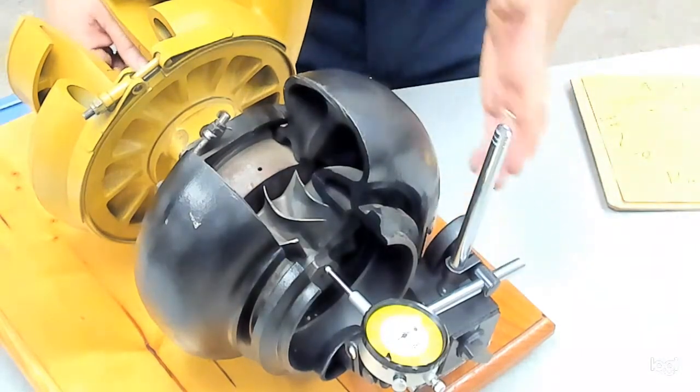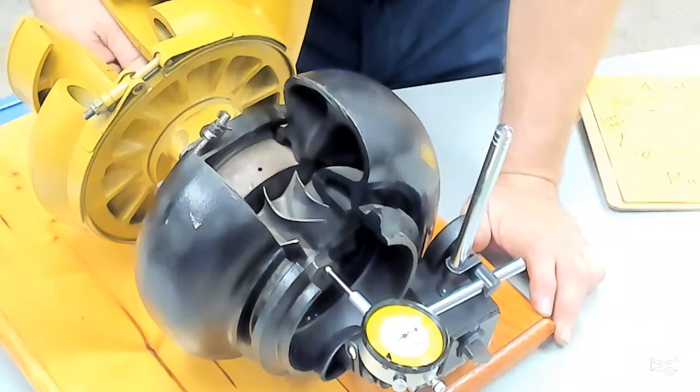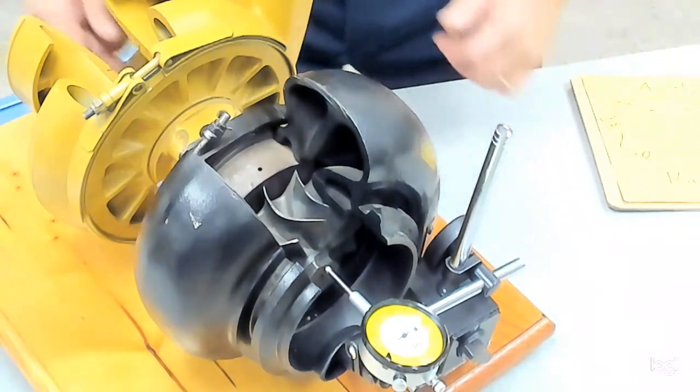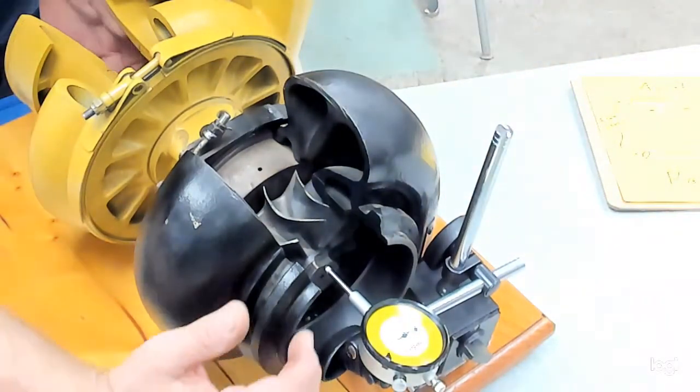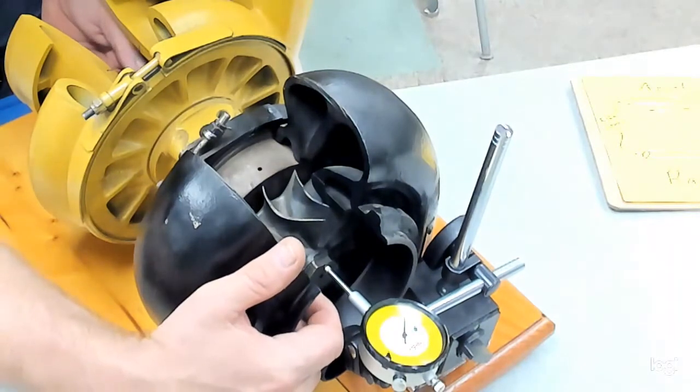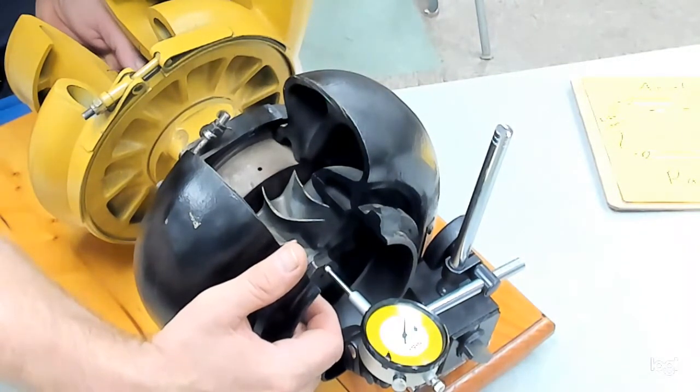And this one's got a little bit more play than normal, but that's how you do it. Move it in and out. You can put your hand on one side without bumping the dial indicator and assist moving it back and forth.